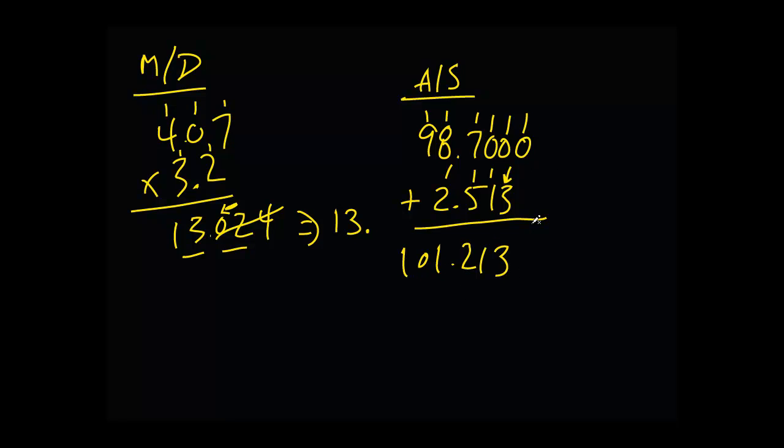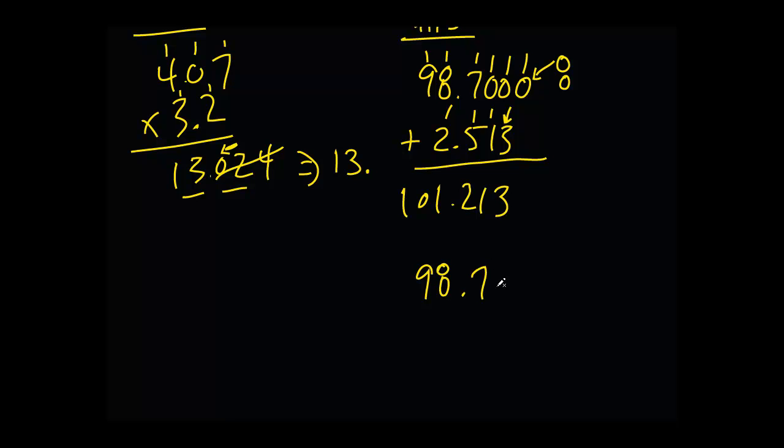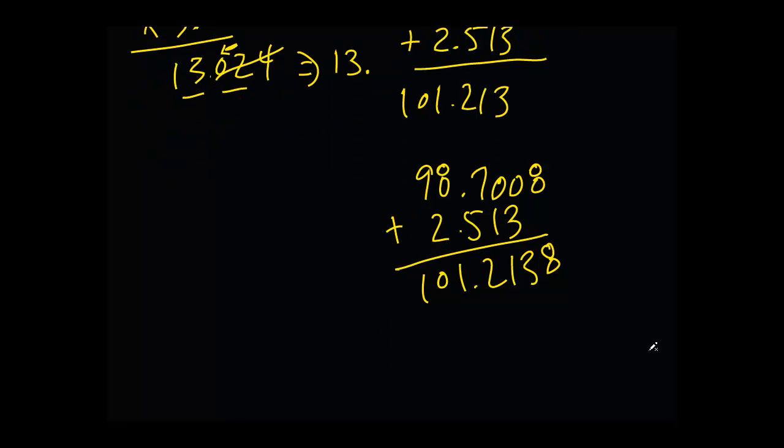So our final answer will have six significant figures. However, if this was, let's say, an 8, how would that change our answer? Now we have 98.7008 plus 2.513. Well, now our answer is going to be 101.2138. However, what does the rule state? When we're writing these two, we can only go up to the tenths, hundredths, thousandths place. So we got to cross this last guy out. But the problem is this last number was an eight, so we got to round up. So now it's 101.214. That's our final answer.